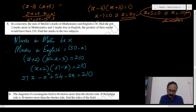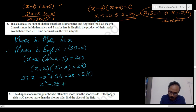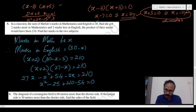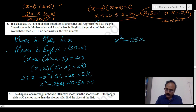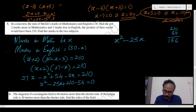So (x plus 2) times (27 minus x) equals 210. Expanding: 27x minus x squared plus 54 minus 2x equals 210. Taking all terms to one side: x squared minus 25x plus 210 minus 54 equals 0, giving x squared minus 25x plus 156 equals 0.